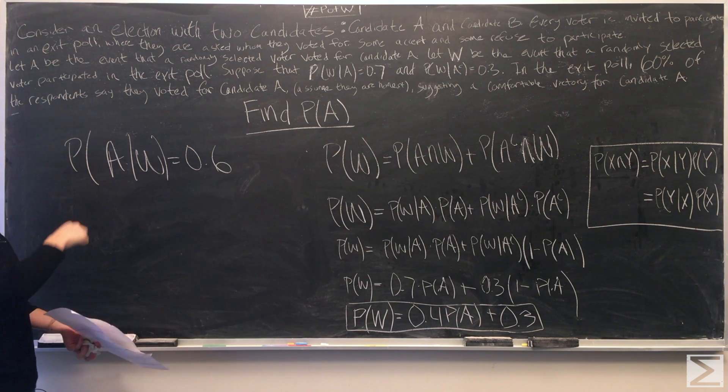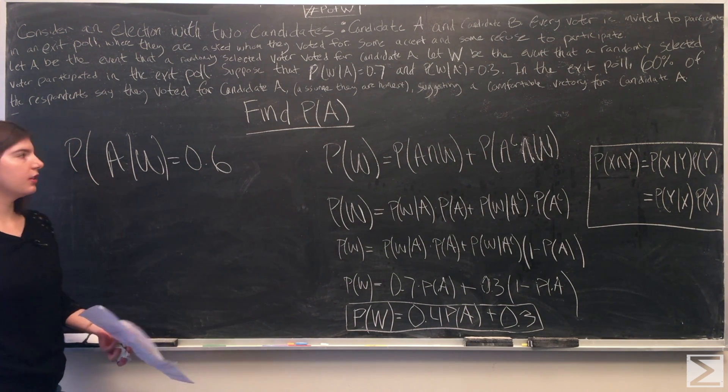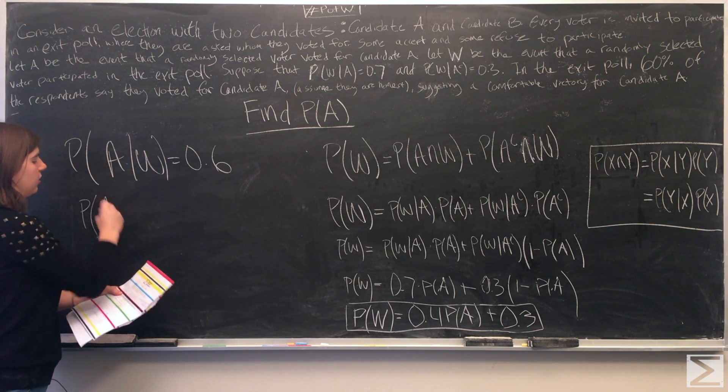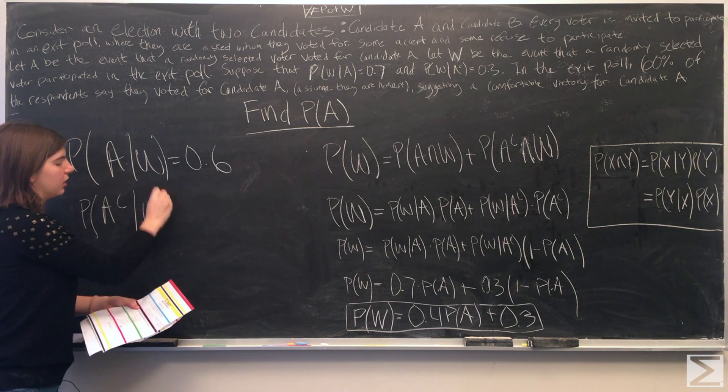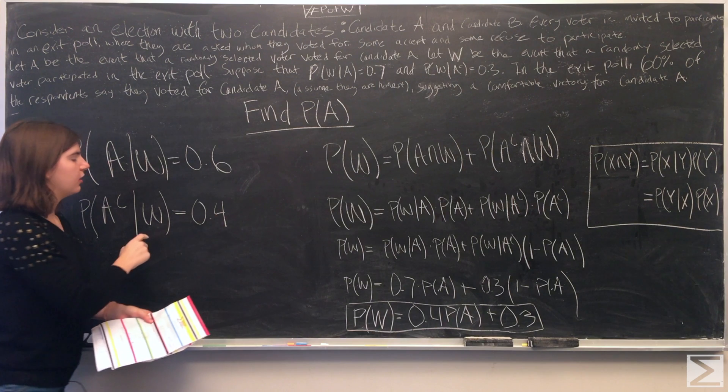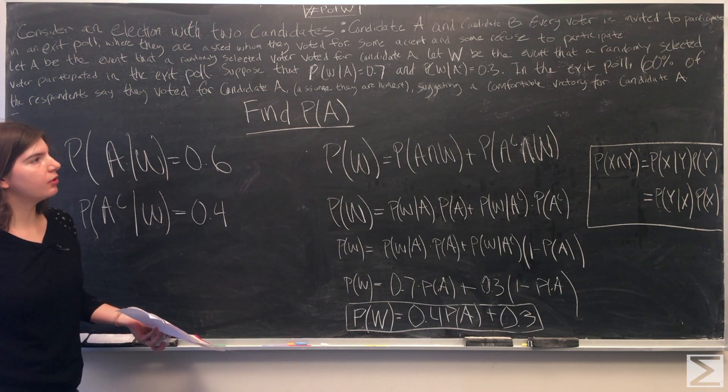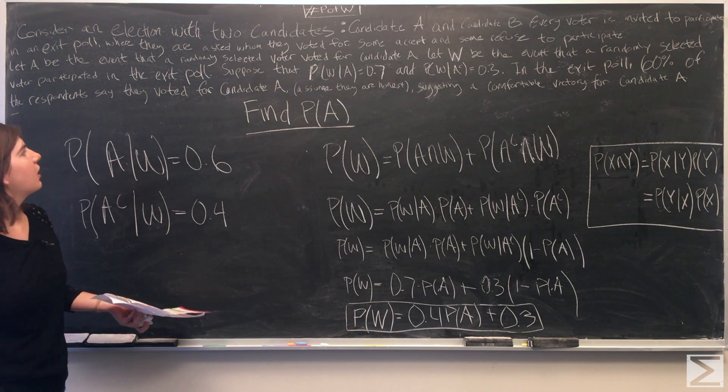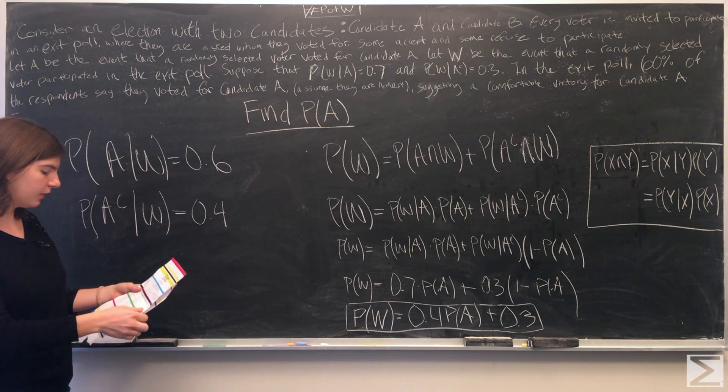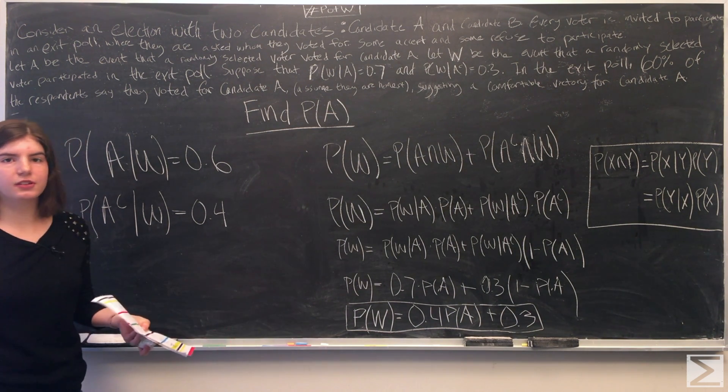The probability of A given W is 0.6, which means that the probability of A complement given W is 0.4. Because if they participated in the exit poll, then that means 40% did not vote for A. Now we can use the definition of conditional probability.